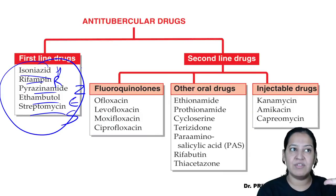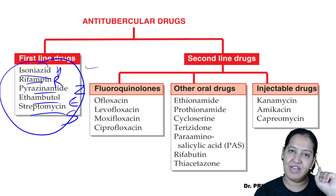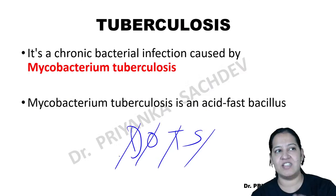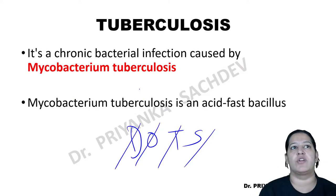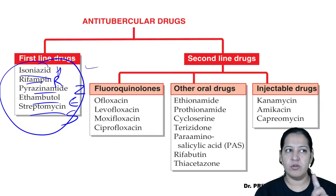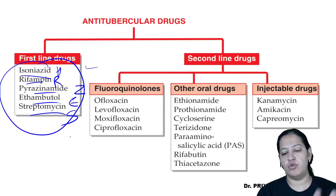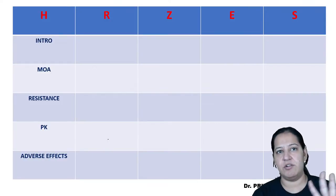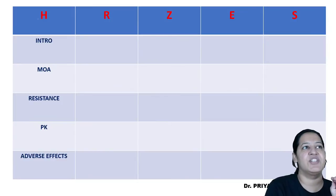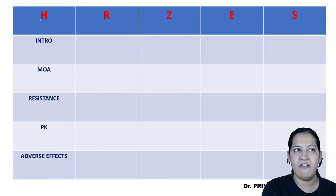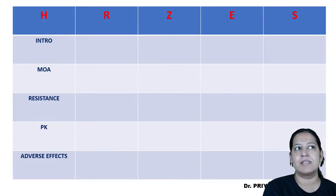I will teach you what combination of these drugs is used in category one and category two patients. Before starting DOTS, I asked you to make a comparative table between H, R, Z, E, and S. We have already done this comparison.